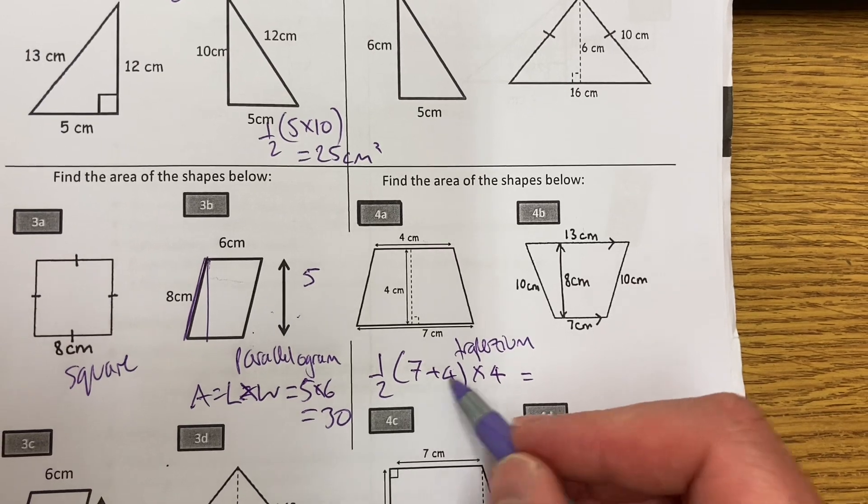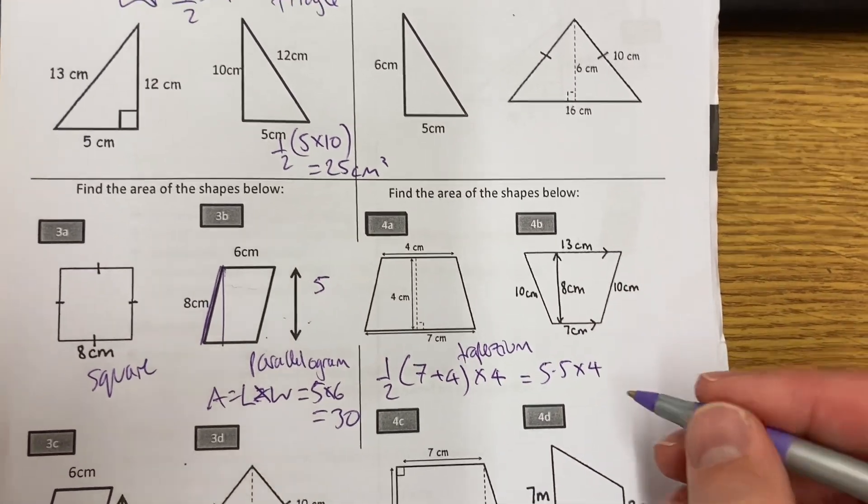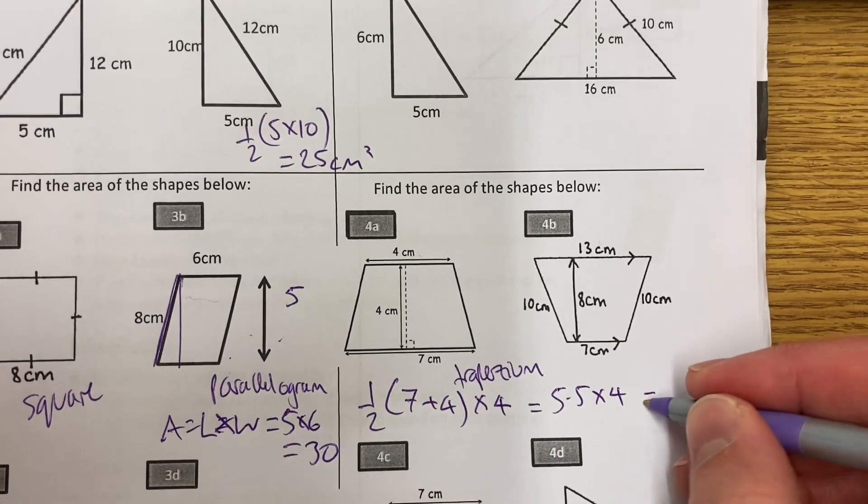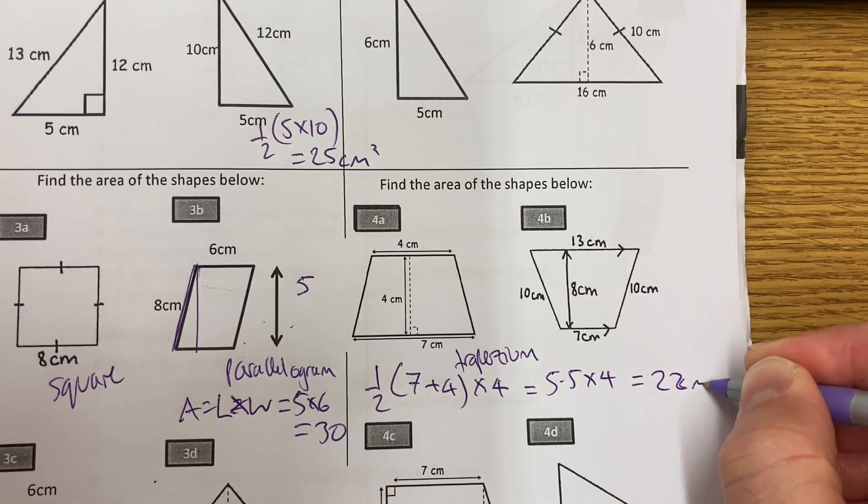So that's 11. Divide by 2 is 5.5 times 4. That's going to be 20 plus 2, so it's going to be 22 centimeters squared.